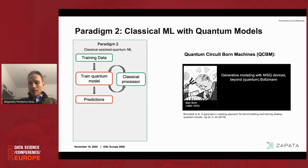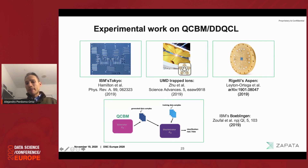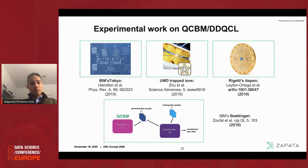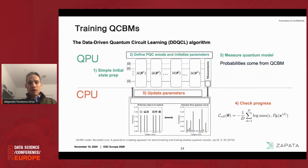Since we proposed this a couple of years ago, there has been exciting theoretical and experimental interest. I'm showing four different implementations: three on superconducting devices — two on IBM, one on Rigetti — one on ion traps, and another on Honeywell that we've explored internally. This is something you can do in the lab right now: train a model to learn bars and stripe patterns, or any other pattern you'd like.